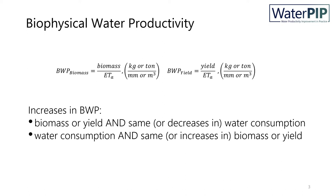Biophysical water productivity is the relation between biomass or yield produced per water consumed — the water that is actually evapotranspired, referred to as ET.